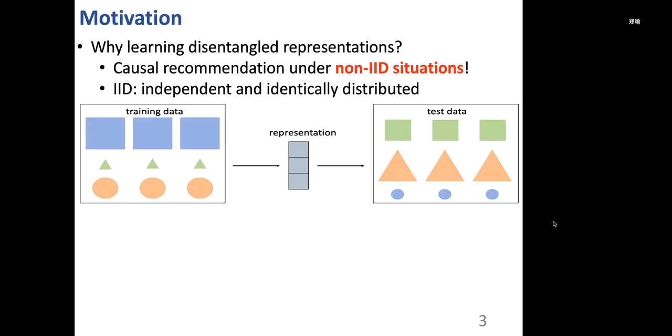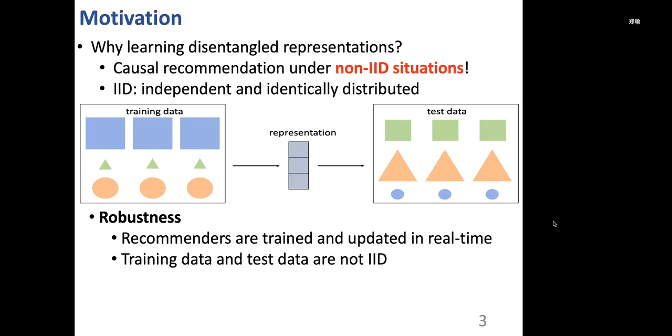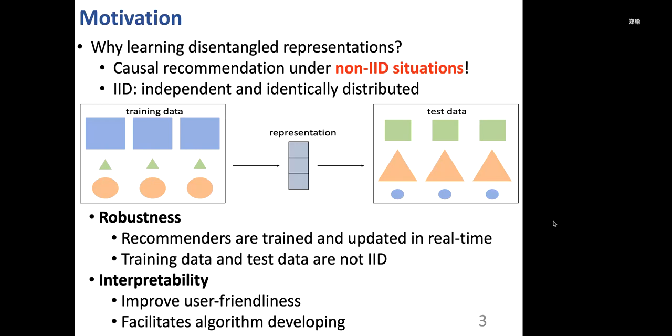In terms of recommender systems, there are two main advantages for learning disentangled representations. The first one is robustness. Since recommenders are trained and updated in real time as the users interact with the system, training data and test data are not IID for recommender systems, and learning disentangled representations could improve the robustness under this non-IID situation. The second advantage is interpretability. With disentangled representations, we can give explanations for each recommended item, and this could improve user-friendliness and facilitates algorithm development.